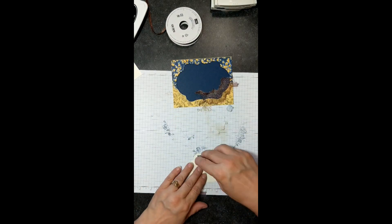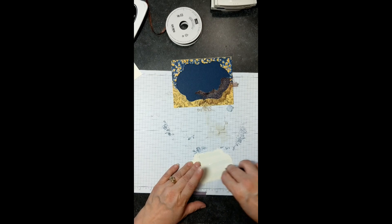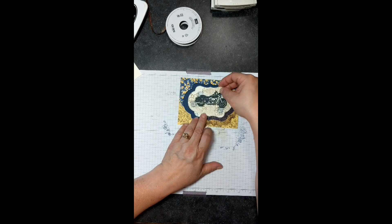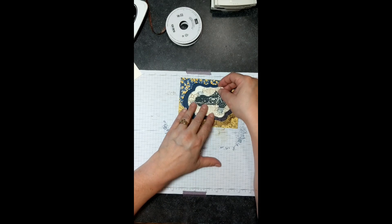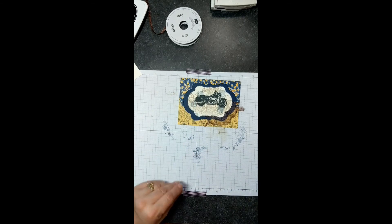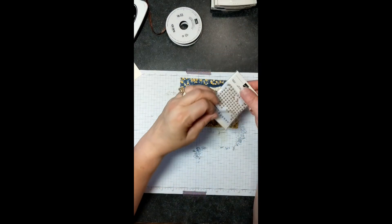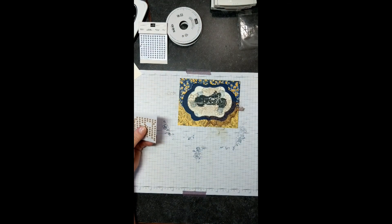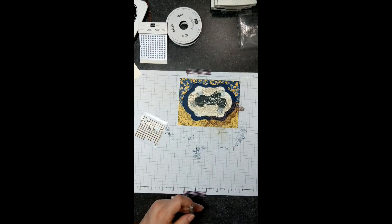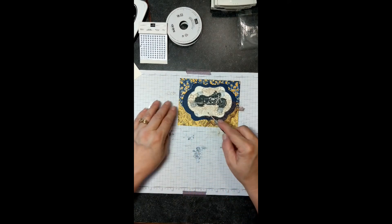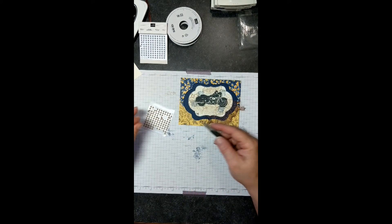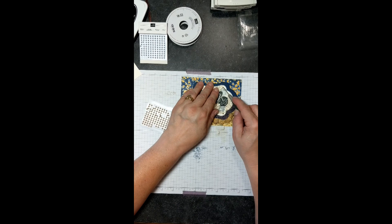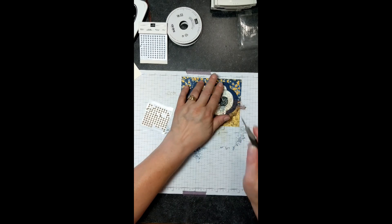And then we will put snail on our last frame here that has our motorcycle and just set that in there as well. And then we're going to take our metallic pearls. I like to use my paper piercer to pluck these little jewels off here because it's so much easier. And then I'm going to just take three and stick them in the corners, just these three corners.